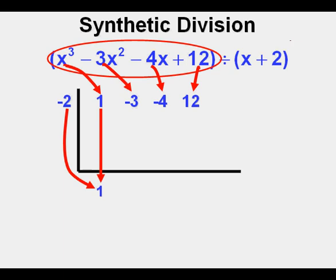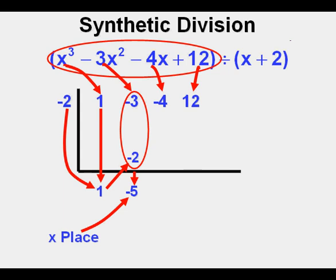The product of those two numbers, negative 2, goes here within the frame at the bottom. Then we take the sum of these two numbers, negative 2 and negative 3, which is negative 5, and place it here below in what is the x term place.